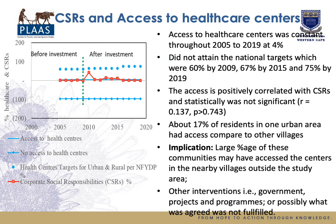On access to healthcare centers: access was constant throughout the study period and did not attain the national targets. Access is positively correlated with CSRs but not statistically significant, and more urban areas had access compared to rural areas. This implies that a large percentage of communities may have accessed healthcare centers in nearby villages outside the study area, or interventions from government and development partners filled the gap — or possibly what was agreed during the contractual phase was not fulfilled by investments.